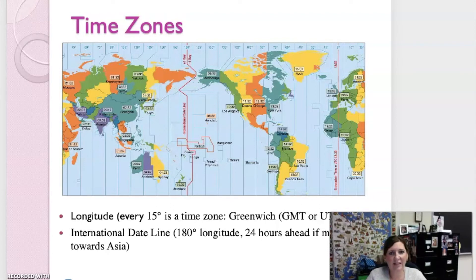The international date line is at 180 degrees longitude. So that's 24 hours ahead if you're moving towards Asia. So here is the prime meridian, zero degrees, and if we move west towards Asia, when we come to the international date line, we are 24 hours ahead.